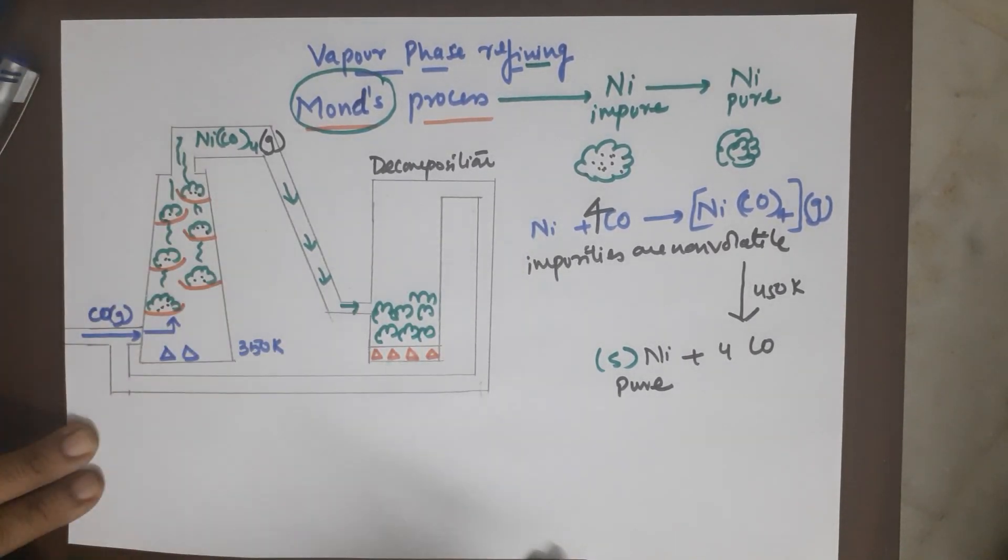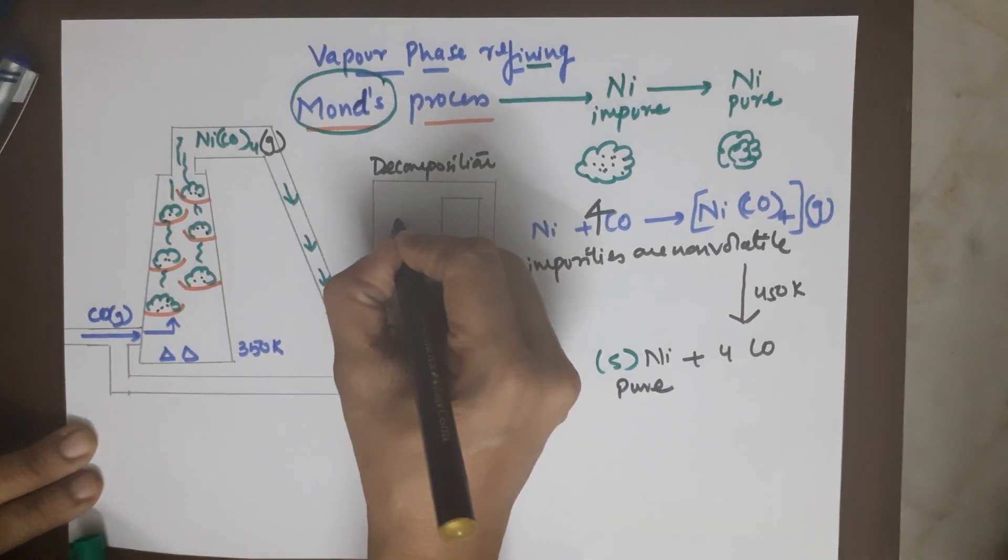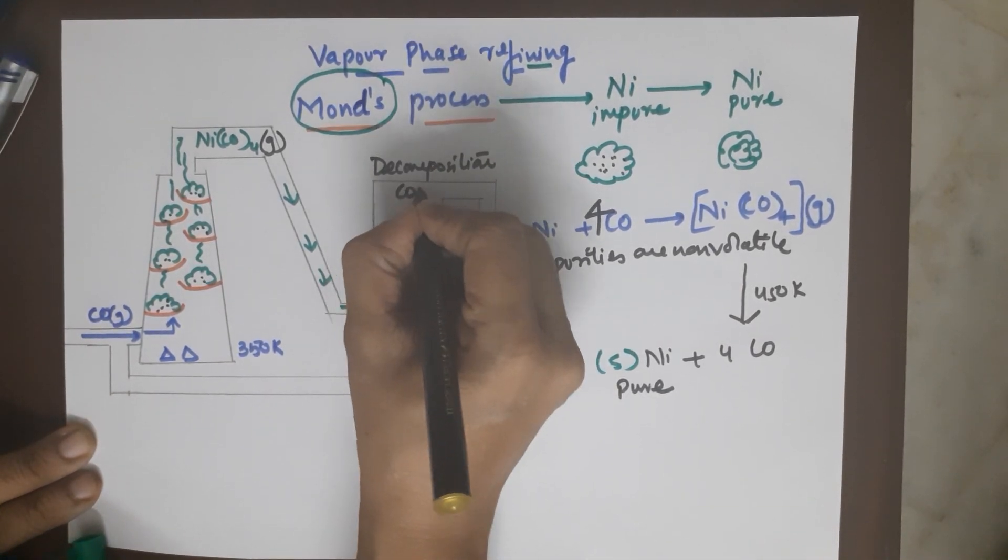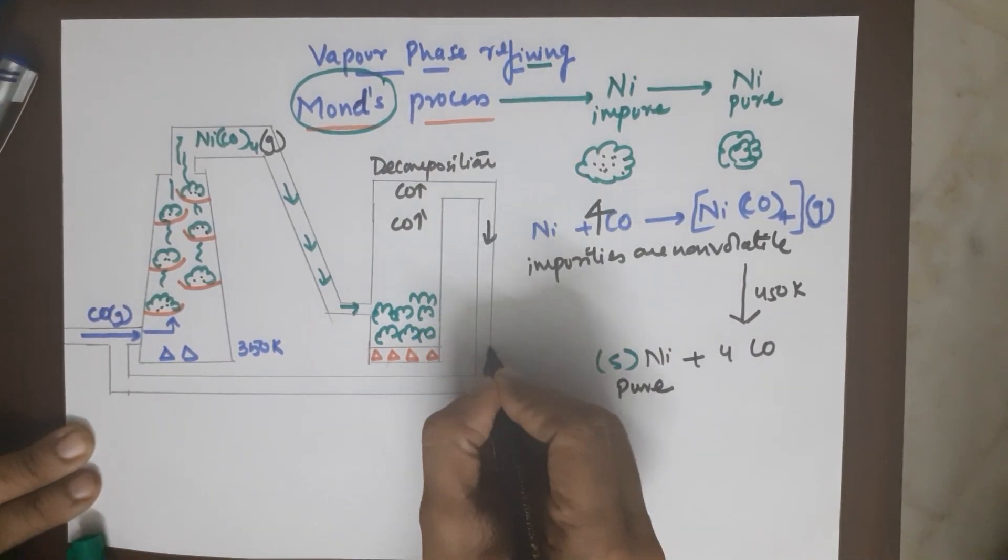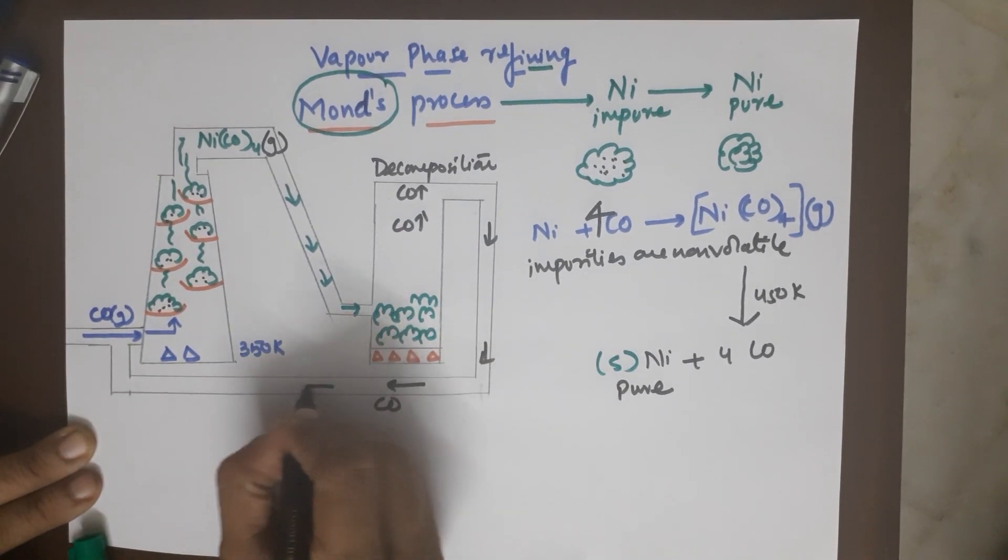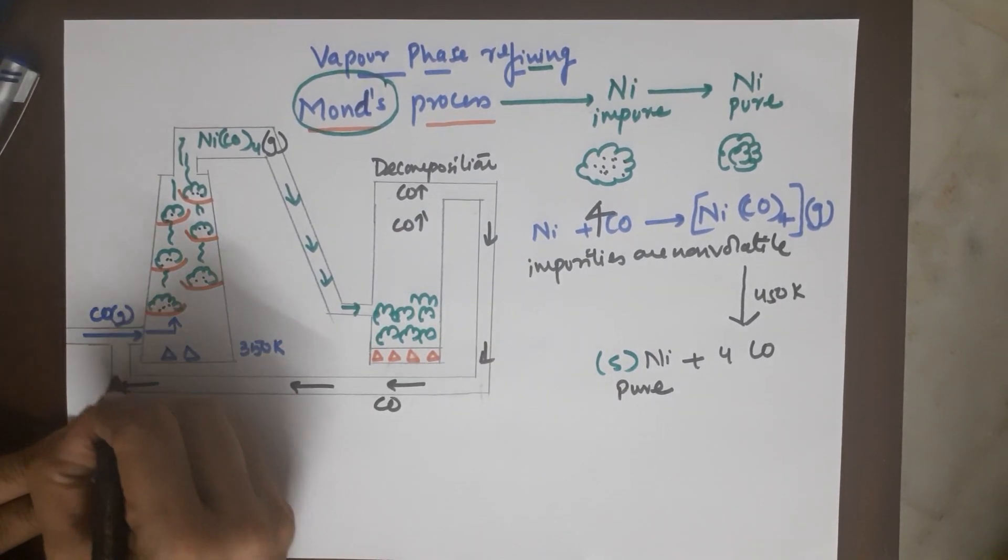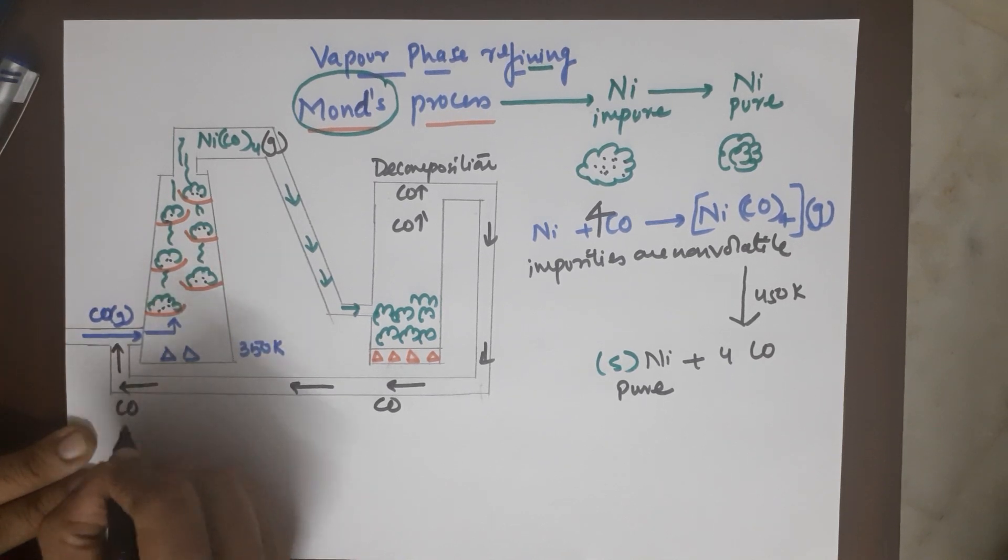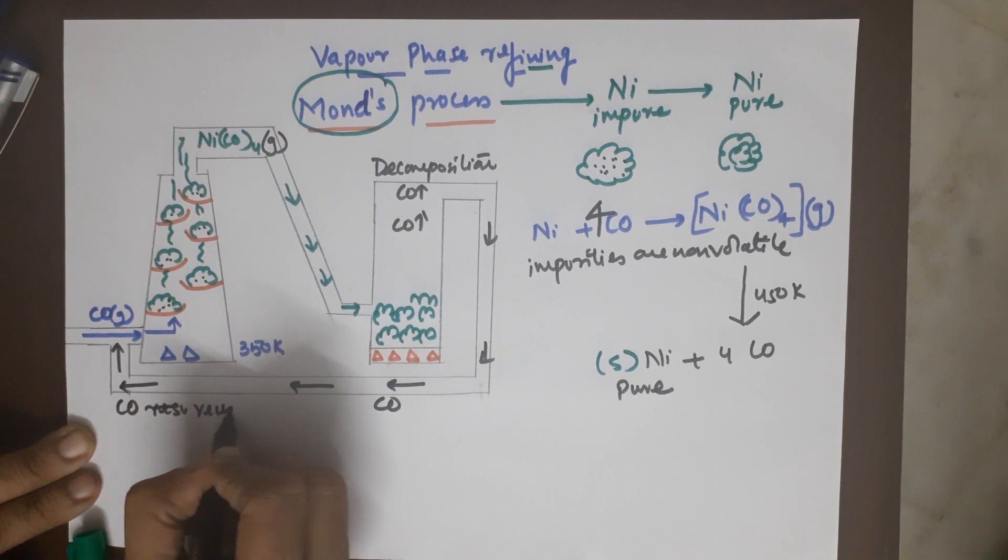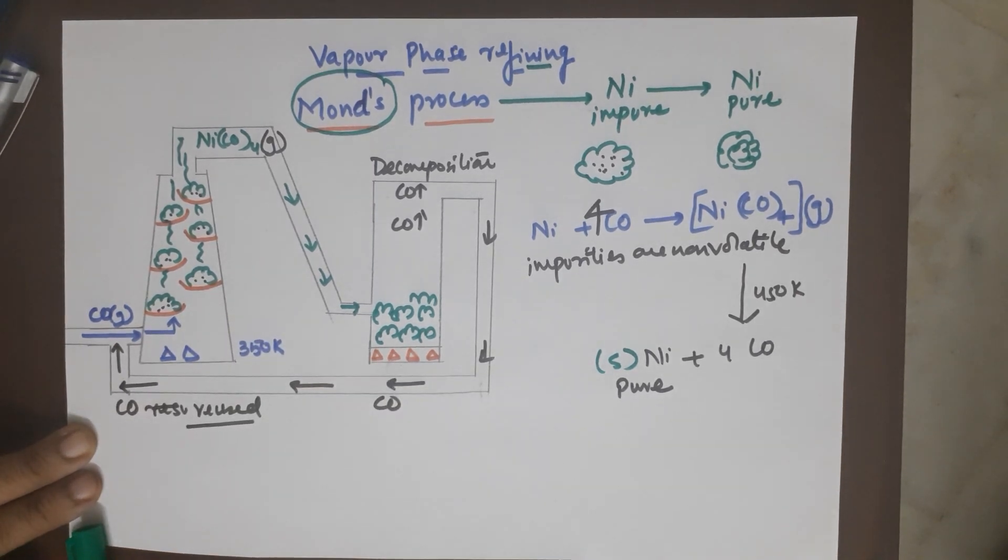This CO gas starts to travel up, moves from here, moves from here, and can be reused in this step. So this is the reused carbon monoxide.